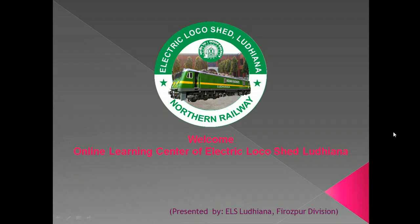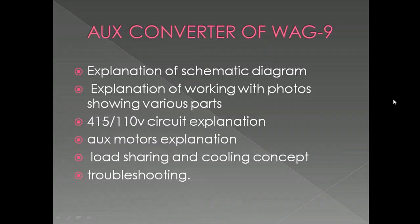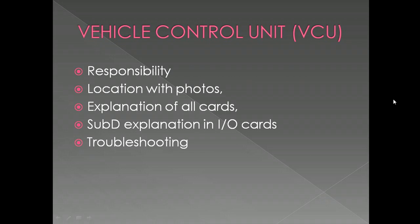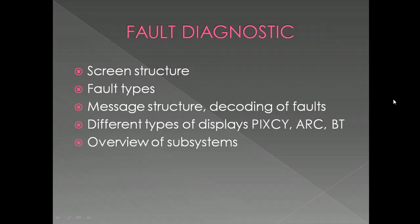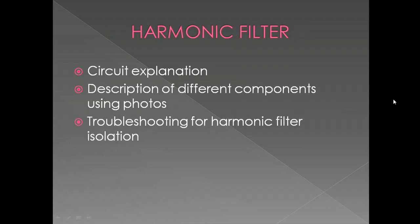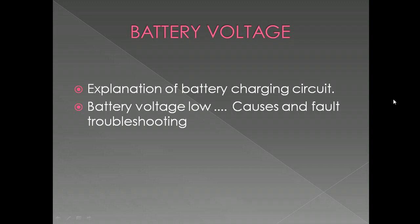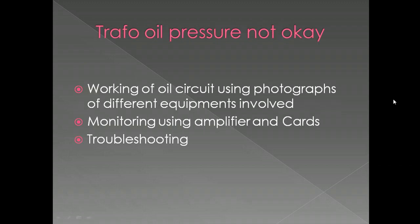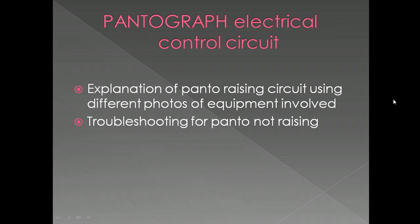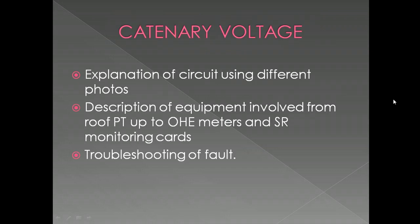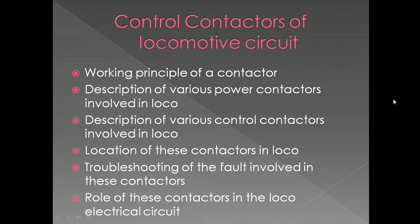In each video we will be explaining different circuits related to different topics. For example: Auxiliary Converter of WAG9, Vehicle Control Unit, Earth Fault Monitoring in WAG9 locomotive, Fault Diagnostic, Traction Converter, Harmonic Filter, Burr Current, Battery Voltage, Trafoil Pressure Not Okay, Earth Fault or Gildi Circuit, TM Speed and Temperature Sensor, Pantograph Electrical Control Circuit, Catenary Voltage, and Controlled Conductors of Locomotive Circuits.